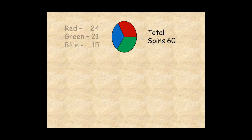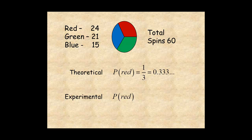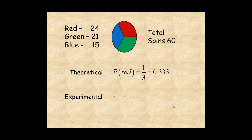For example, here are the results of an experiment in which a spinner with three equal sections is spun 60 times. The theoretical probability of spinning red is one chance out of three, or 0.3 repeating. What actually happened — the experimental probability — the spinner landed on red 24 out of 60 times, which simplifies to 2 over 5, or about 0.4.